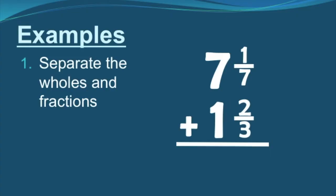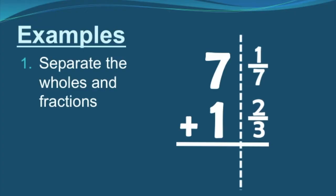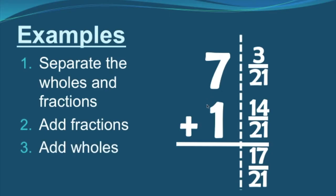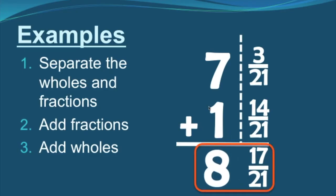Another example. Step one: separate the wholes and the fractions. Step two: add the fractions — these are unlike fractions, so we have to change the denominator, and the denominator is going to become 21. This gives us 3 over 21 plus 14 over 21, and together that's 17 over 21. This isn't an improper fraction, so there's no need to carry. Step three: add the wholes — seven plus one gives us eight. Our final answer is eight and 17 over 21.